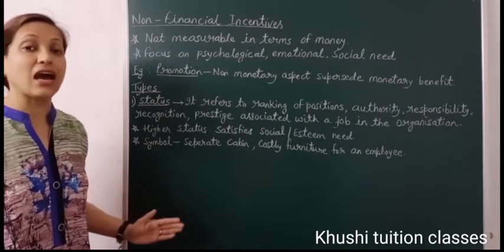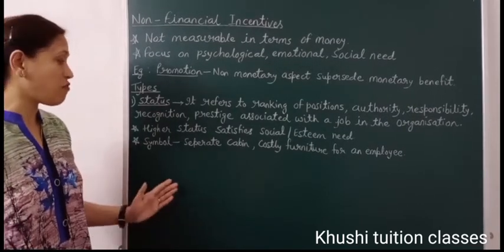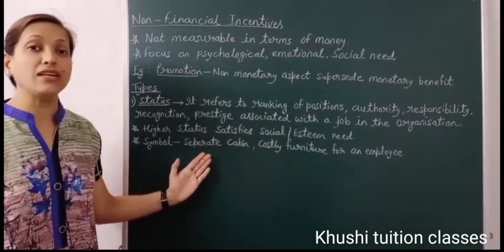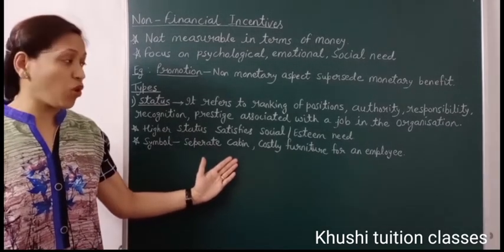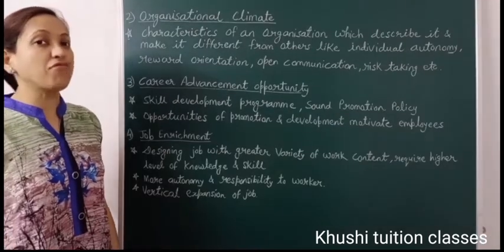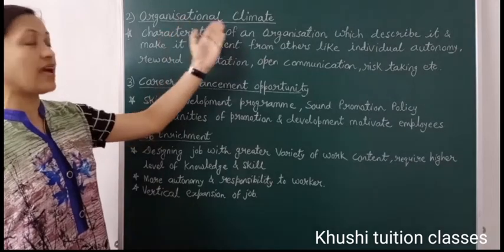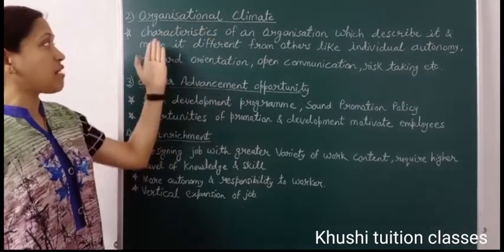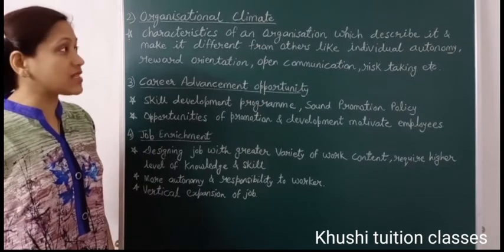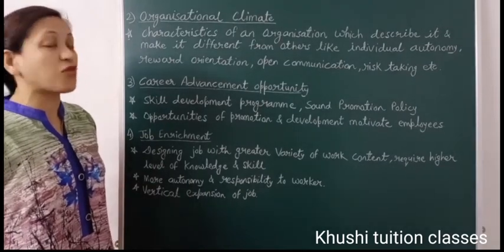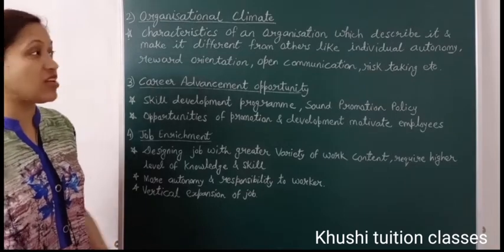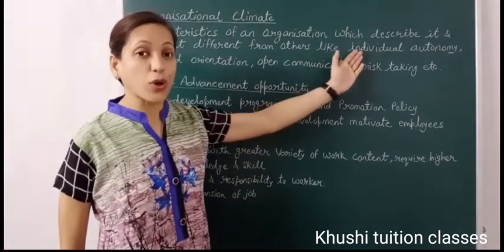The status of a person can be recognized through symbols — for example, management may provide a separate cabin with costly furniture. The second non-financial incentive is organizational climate, which refers to the characteristics of an organization that describe it and make it different from other organizations. Examples of these characteristics include individual autonomy,